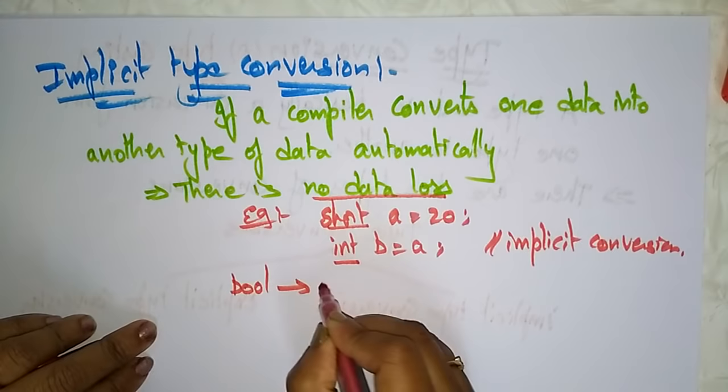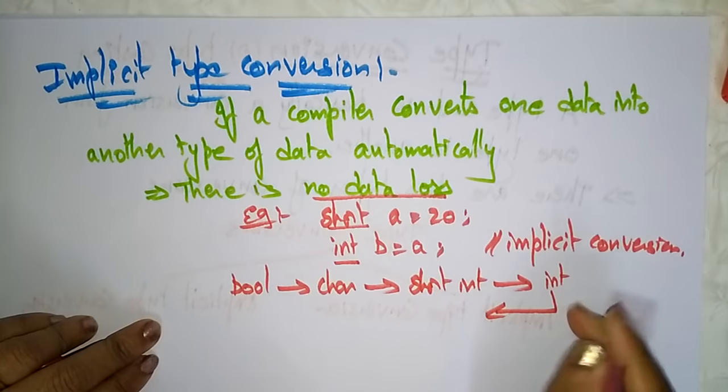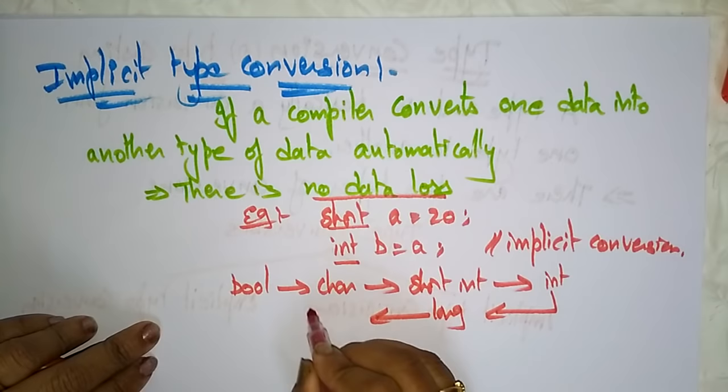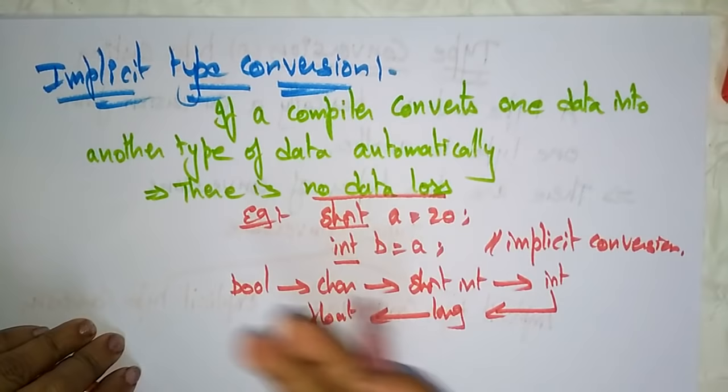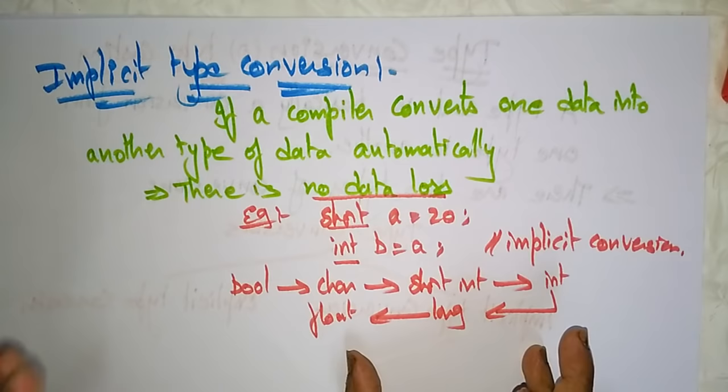You can assign boolean values to character, convert character to short int, short int to integer, integer to long, and long to float — always converting from a smaller to a bigger type. This is done automatically with no forcing, and that is called implicit type conversion.